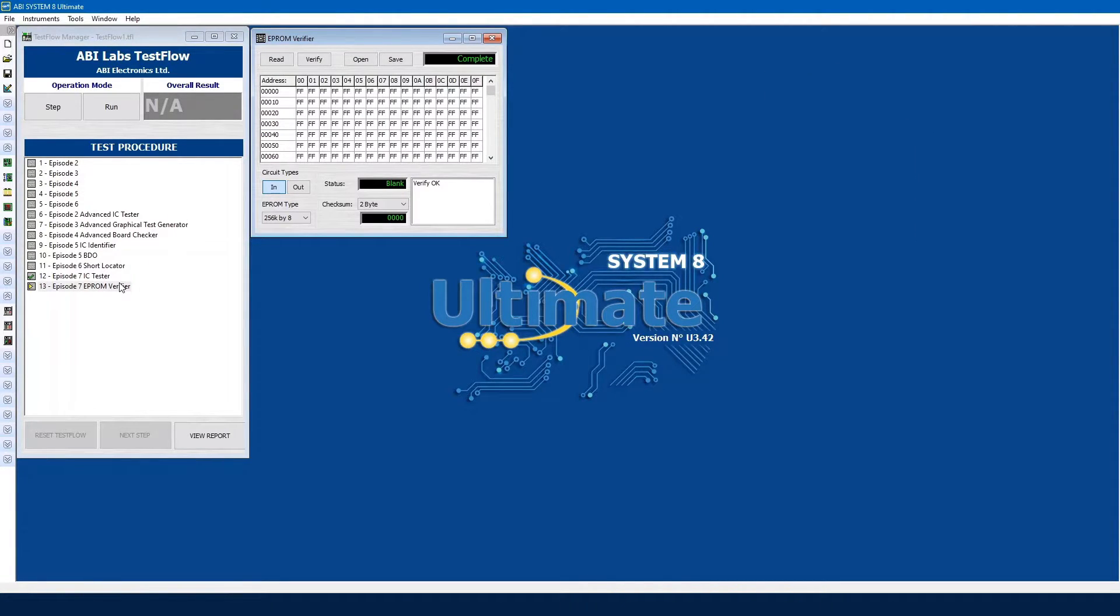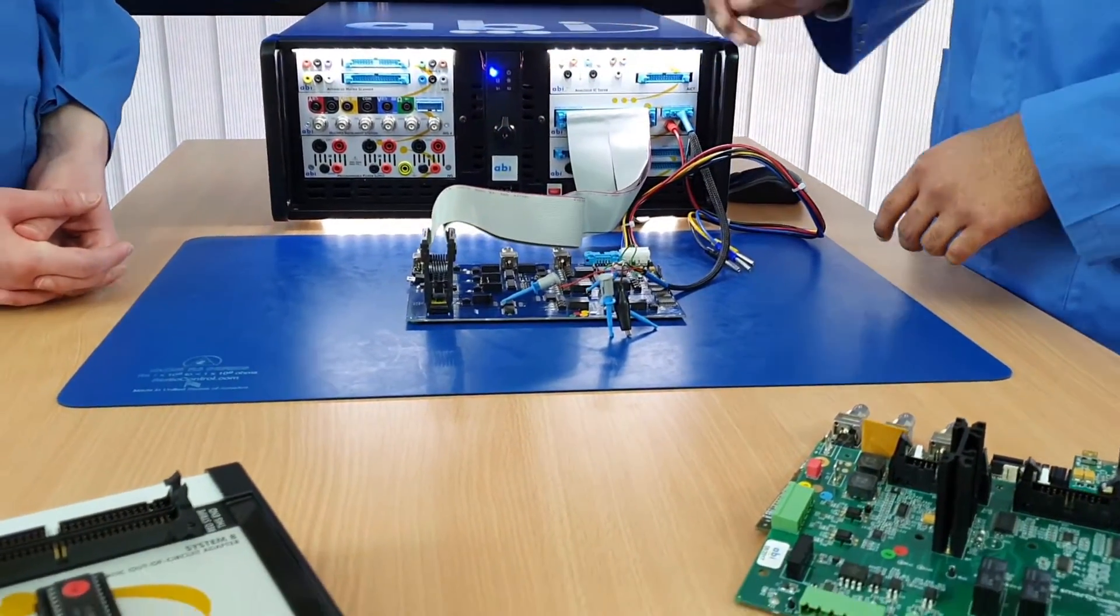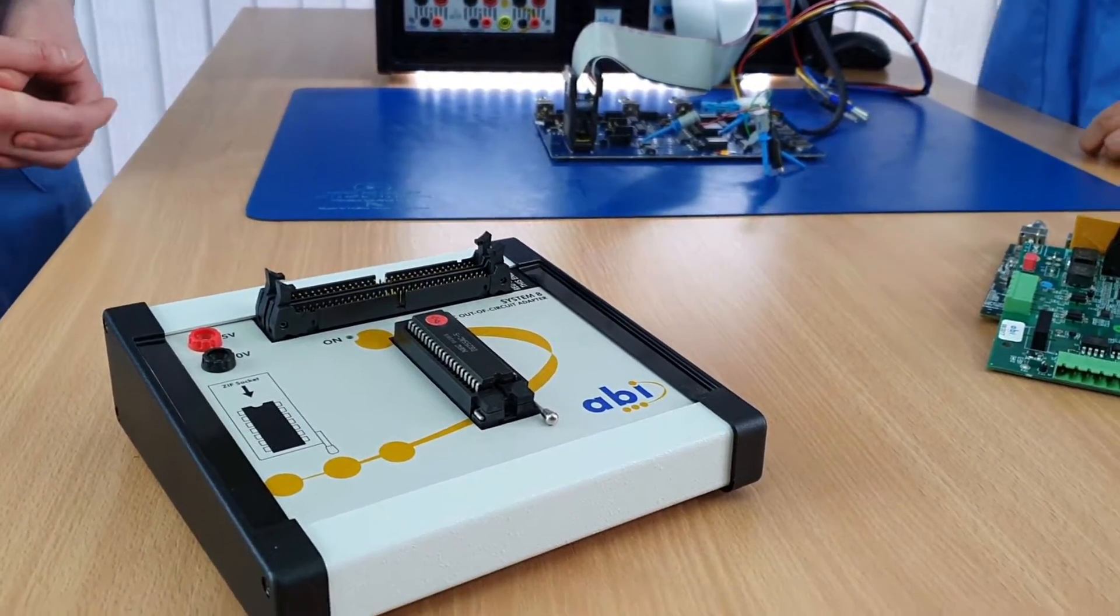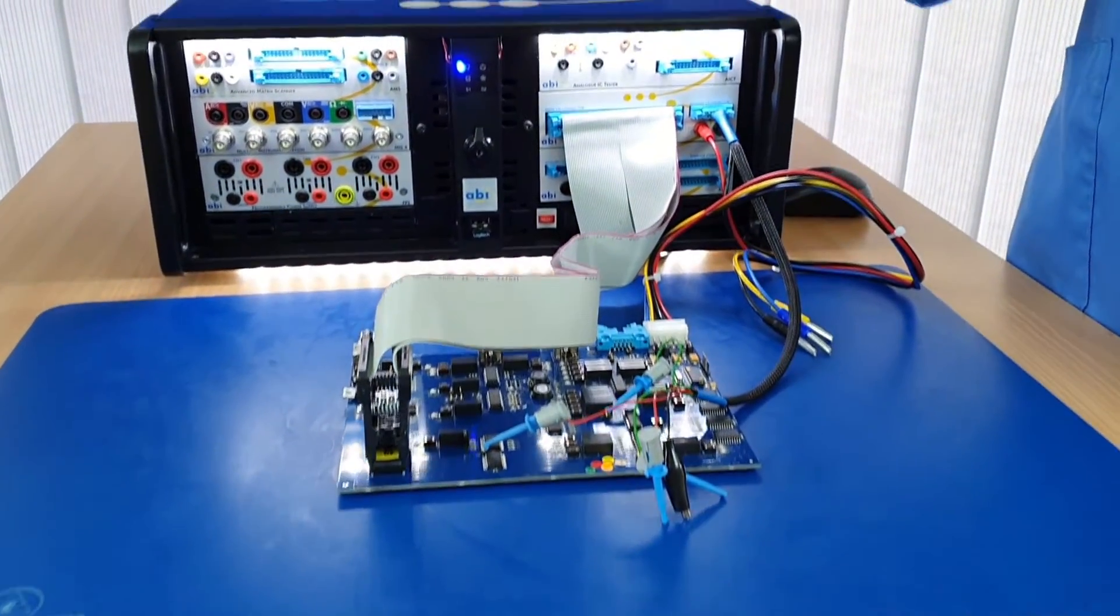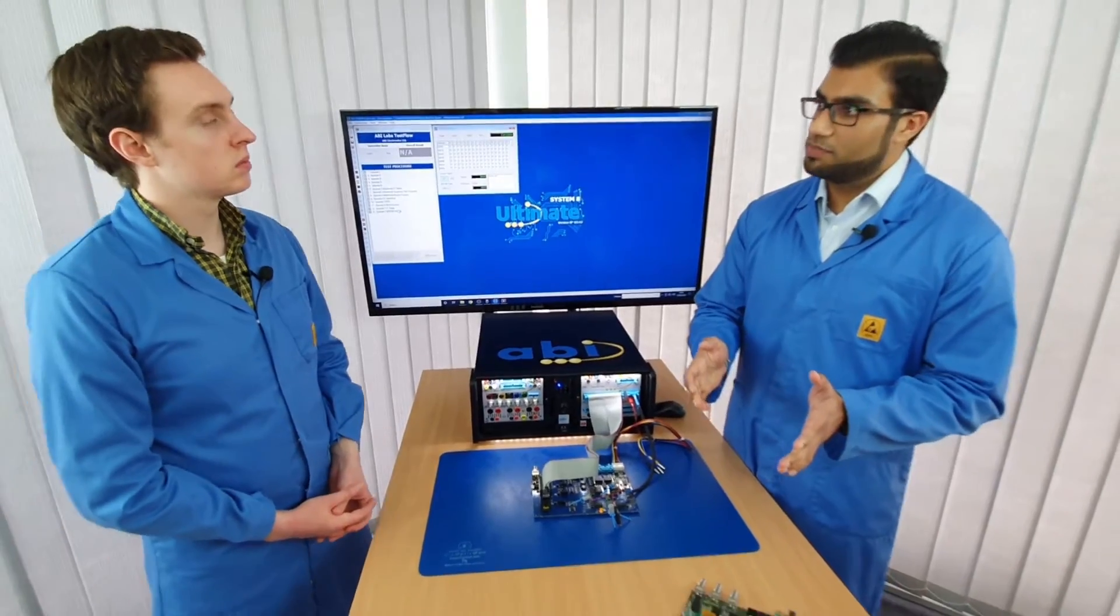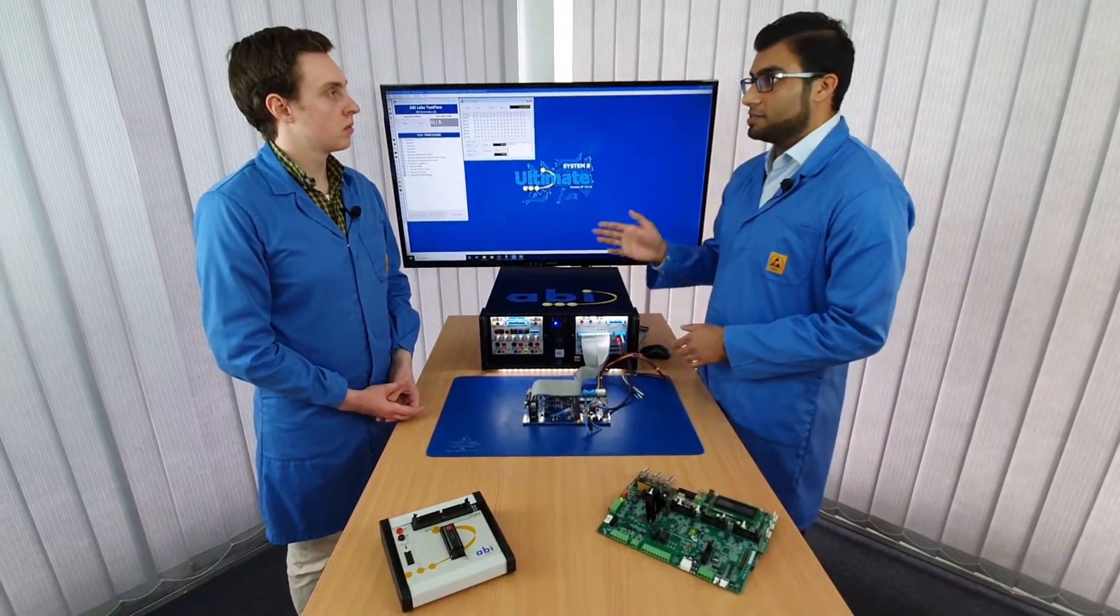Because we're doing it in-circuit, we obviously need to check all our incoming signals into our EEPROM itself, hence why we use the BDO cable. But if we are testing out-of-circuit with the out-of-circuit adapter, we don't need any of that. We simply connect the IC by itself into the out-of-circuit adapter, and obviously the out-of-circuit adapter is connected directly to the BFL itself. Simply click on and start the test.